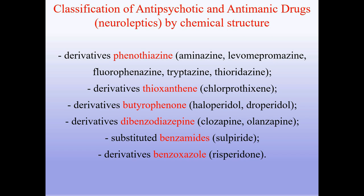Classification by chemical structure: derivatives of phenothiazine — aminazine, levomepromazine, fluphenazine, trifluoperazine, thioridazine; derivatives of thioxanthene — chlorprothixene; derivatives of butyrophenone — haloperidol, droperidol; derivatives of dibenzodiazepine — clozapine, olanzapine; substituted benzamides — sulpiride; and derivatives of benzisoxazole — risperidone.